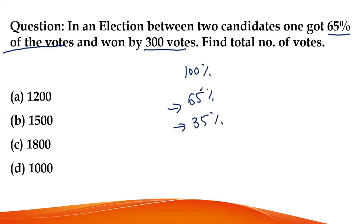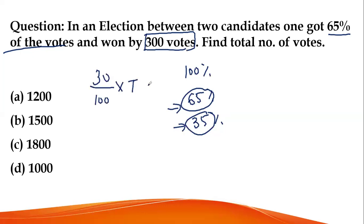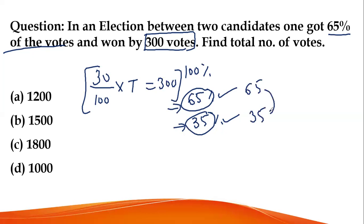So the winner has 65% and the loser has 35%, meaning the difference in percentage is 30%. And in actual votes, that difference is 300 votes. This means 30% of the total votes equals 300. Therefore, the total votes will be 1,000 — that is option D, which is correct.